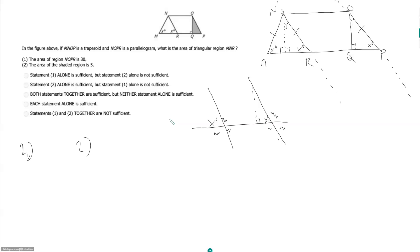The area of the shaded region is five. So that is sufficient. Now remember, it means the area of MRN is going to be 10, right? But data sufficiency doesn't matter. So this is sufficient.